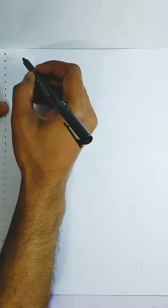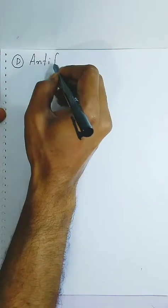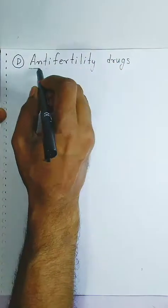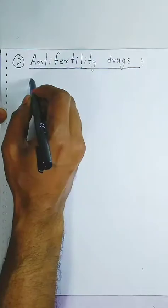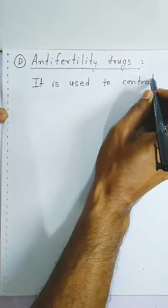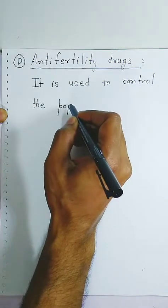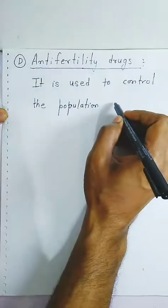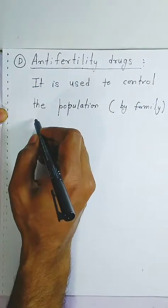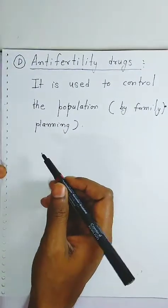Now we are going to see the next part of the chapter, that is anti-fertility drugs. The drugs which are against fertility are called anti-fertility drugs. They are used to control the population — this is also called family planning. For family planning, we use these anti-fertility drugs.